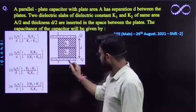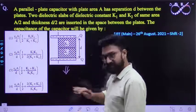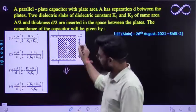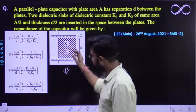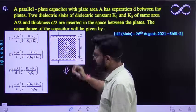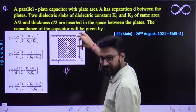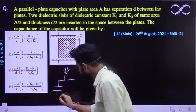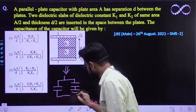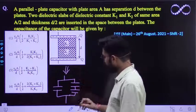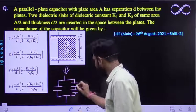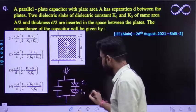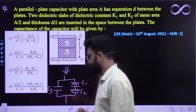Ab jaldi se visualise karenge aur isko further redraw karenge. It is a combination of three capacitances. Iska dielectric constant K1 hai, iska dielectric constant K2 hai. Let iska capacitance C1 hai, let iska capacitance C2 hai, and let iswale ka capacitance let it be C3.